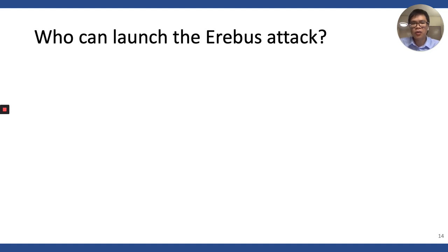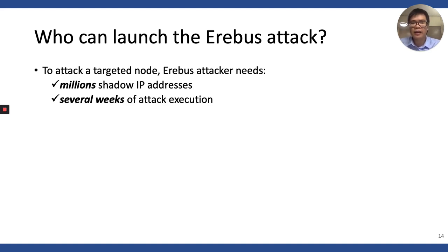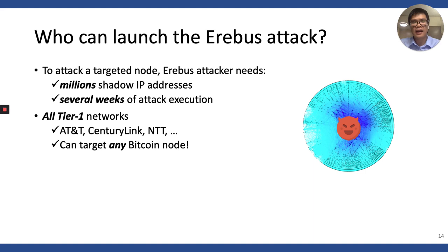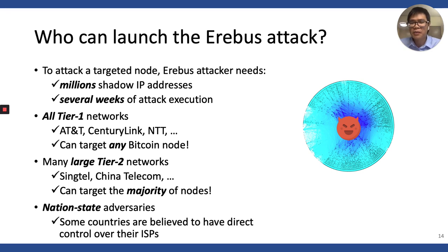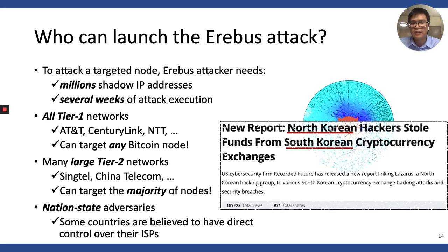You may also wonder who could be the attacker of the EREBUS attacks. The attacker should be able to collect millions of saddle IPs and also patiently wait for several weeks. Based on these criteria, we found that all tier-1 networks like AT&T and CenturyLink can perform EREBUS attacks against any Bitcoin nodes. Also, large tier-2 networks like Singtel or China Telecom can also target the majority of Bitcoin nodes. While ISPs may not have direct motivation to attack Bitcoin, some nation-state adversaries can control one or more ISPs and also perform EREBUS attacks. This is not a far-fetched idea given that some countries are already attacking other countries in the cryptocurrency domain.